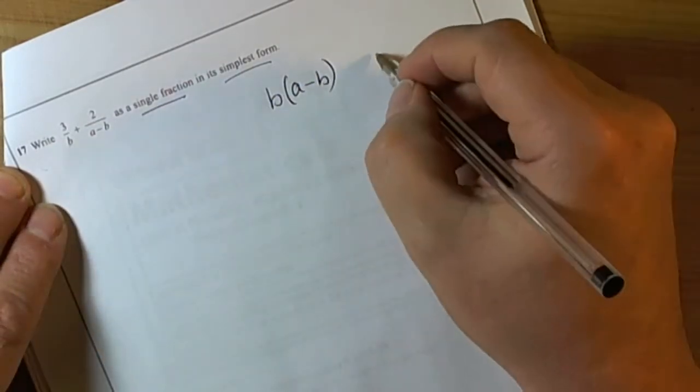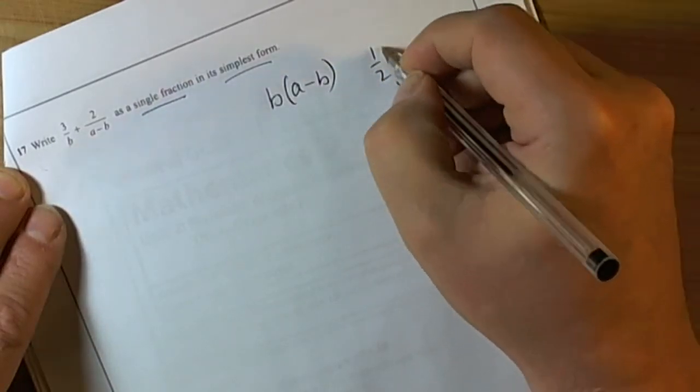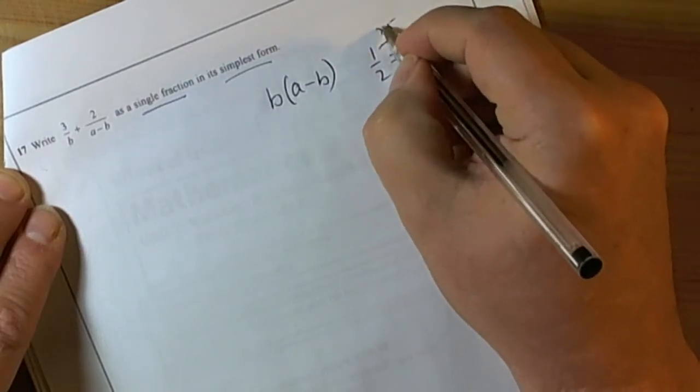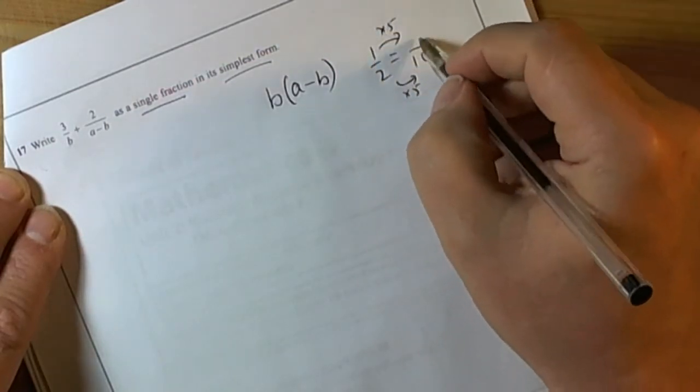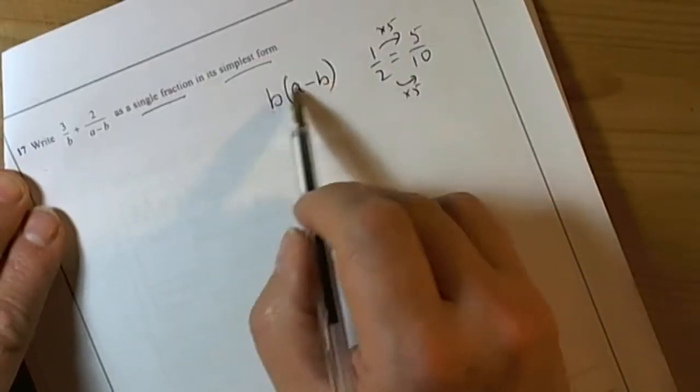Just like if we were trying to turn a half into tenths, we'd find what we multiply by and do the same to top and bottom of the fraction to get five tenths. We're going to do the same to these fractions to end up with the same denominator on the bottom.